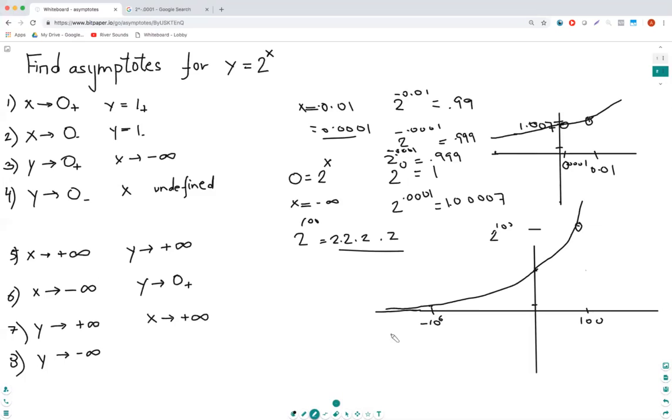And y tending to minus infinity is somewhere in this region, and of course we know the exponents are always limited to the positive side of y. So there would be no x here. This would be undefined.